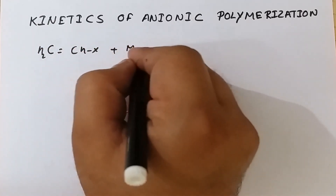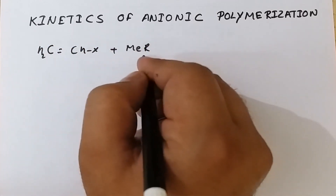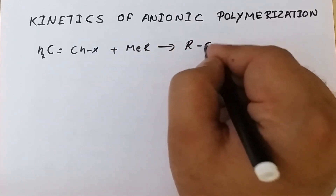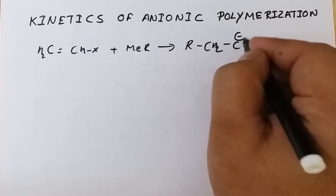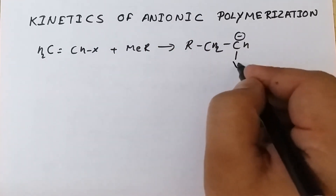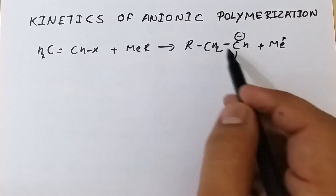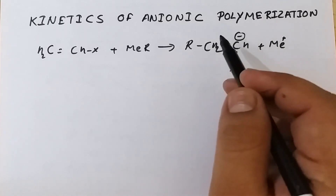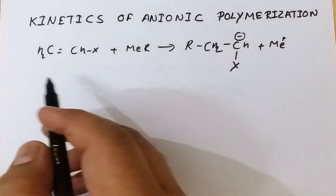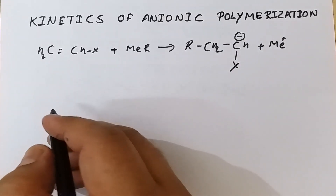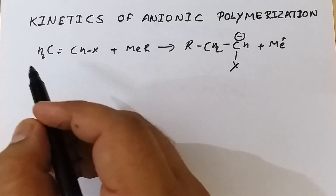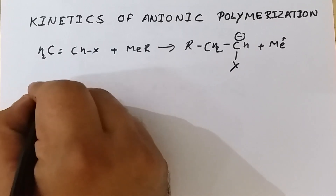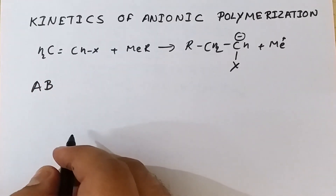For example, in the polymerization of an olefin, the olefin reacts in the presence of an organometallic compound, resulting in formation of a carbanion on the monomer. The carbanion then propagates and polymerization takes place. Moving on to the kinetics of anionic polymerization, the steps are the same as we have seen in free radical polymerization as well as cationic polymerization. Suppose AB is the catalyst.